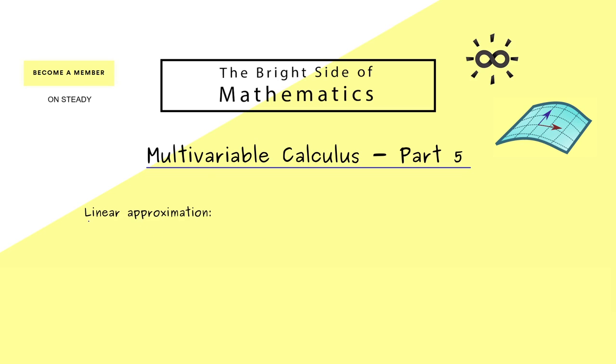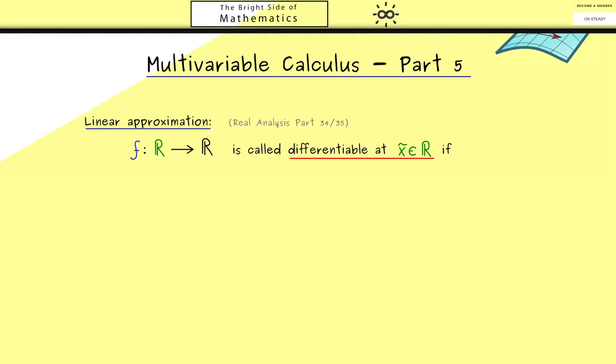Therefore let's recall how a linear approximation with the derivative works in one dimension. This means now we consider a function f from R into R. Moreover you should know this linear approximation with secants and a tangent we have discussed in real analysis part 34 and 35. However let's quickly recall what it means that such a function is differentiable at a given point x tilde. Roughly speaking it means that we can approximate the function around this point x tilde linearly. This means we look at x tilde and shift it a little bit by a number h. And now this should be f at the point x tilde plus a linear function we could write as b times h.